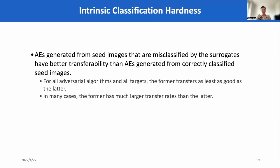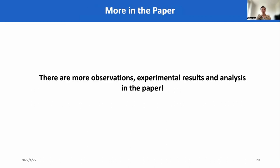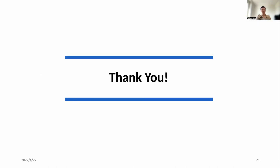We also considered the intrinsic classification hardness. We found that adversarial examples generated from images that are misclassified by the surrogate transfer better than AEs generated from correctly classified images. The experiment shows that for all adversarial algorithms and all attacks, the former transfers at least as well as the latter, and in many cases the former has much larger transfer rates. This suggests that images that are harder to classify are easier for transfer attacks. There are more observations, experimental results, and analysis in the paper. We strongly recommend the audience to refer to our paper for more details. Thank you very much for your attention.